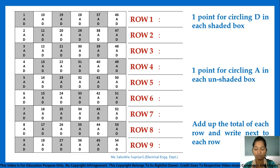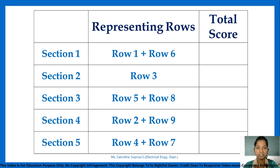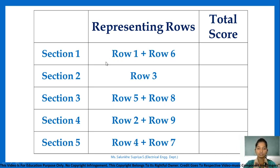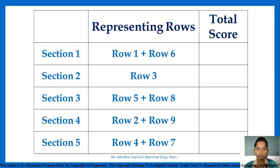You calculate the total score for each row and put it in a table. There are 5 sections: Section 1 is row 1 plus row 6; Section 2 is row 3; Section 3 is rows 5 and 8; Section 4 is rows 2 and 9; and Section 5 is rows 4 and 7. After calculating the score for each row, you add the relevant rows to get the section score. For example, if you get 2 in row 1 and 3 in row 6, your Section 1 score is 5. After calculating each section score, you find out what traits you possess.